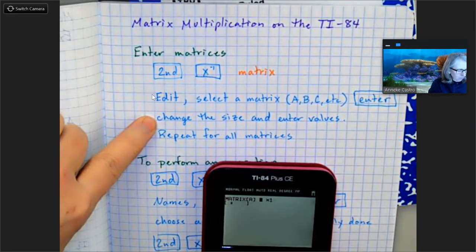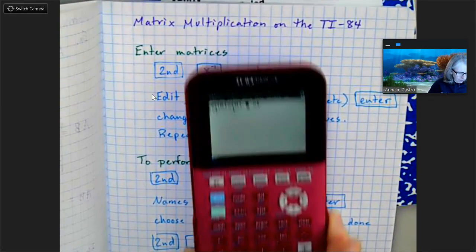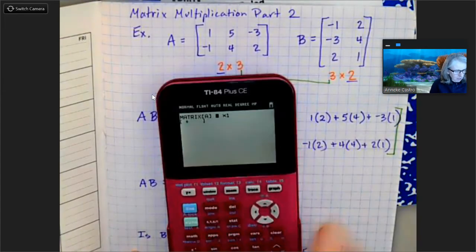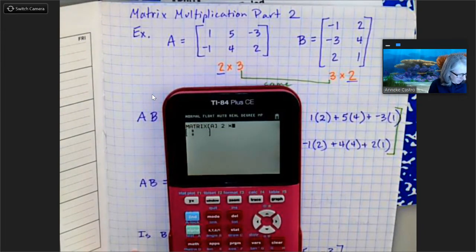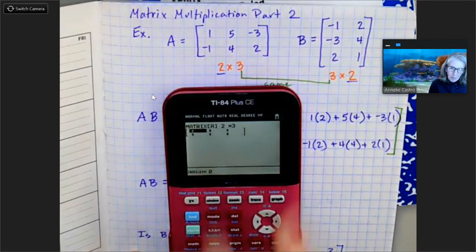Now I'm going to tell it the size. I'm going to change the size and enter my values. My size for this one, it was a 2 by 3, so I'm going to do 2 and 3, and then it's going to give me a 2 by 3 matrix for me to fill in my numbers.